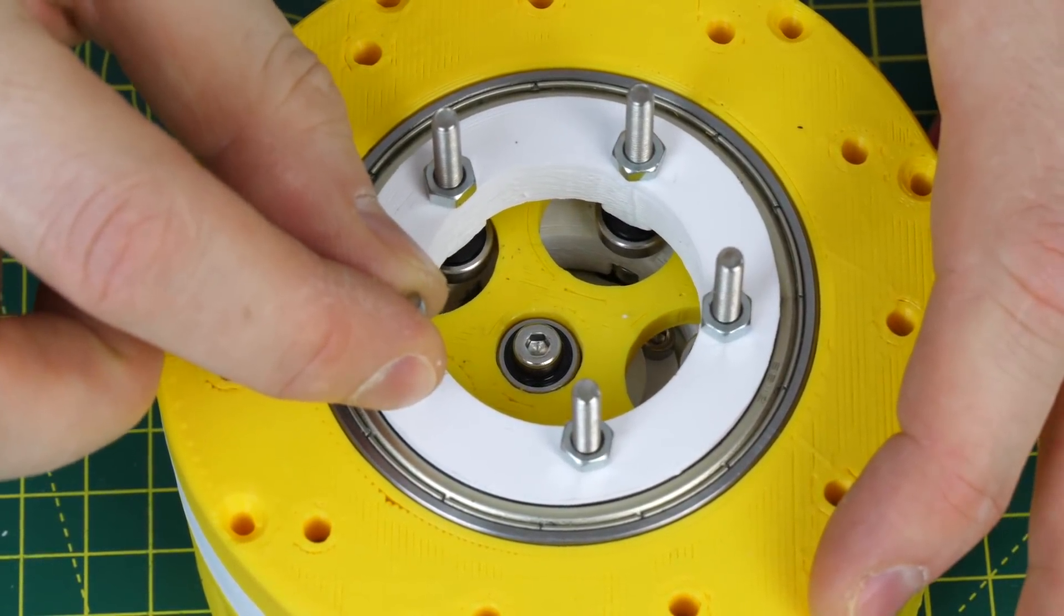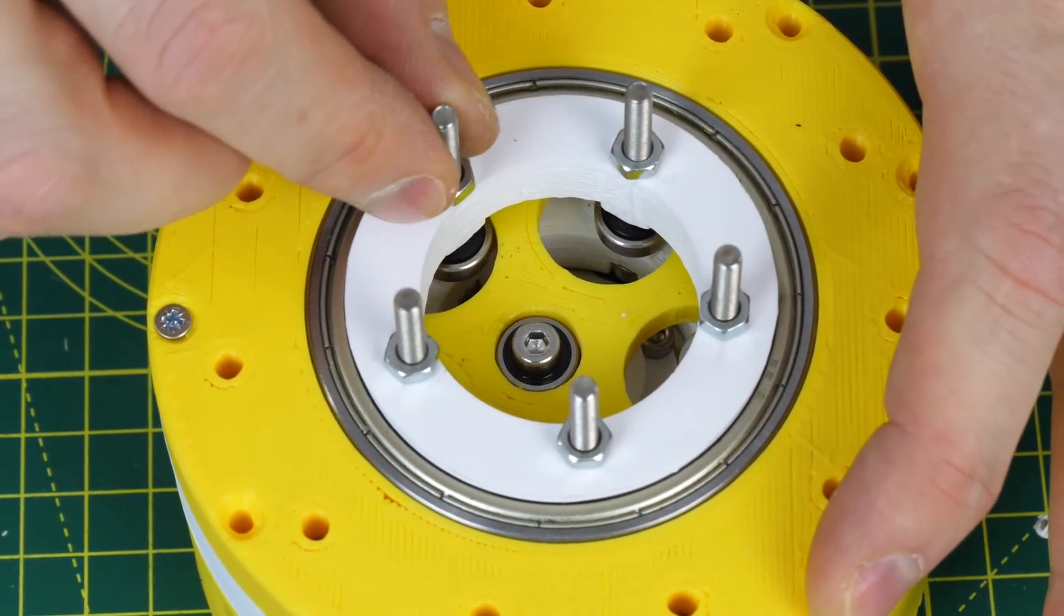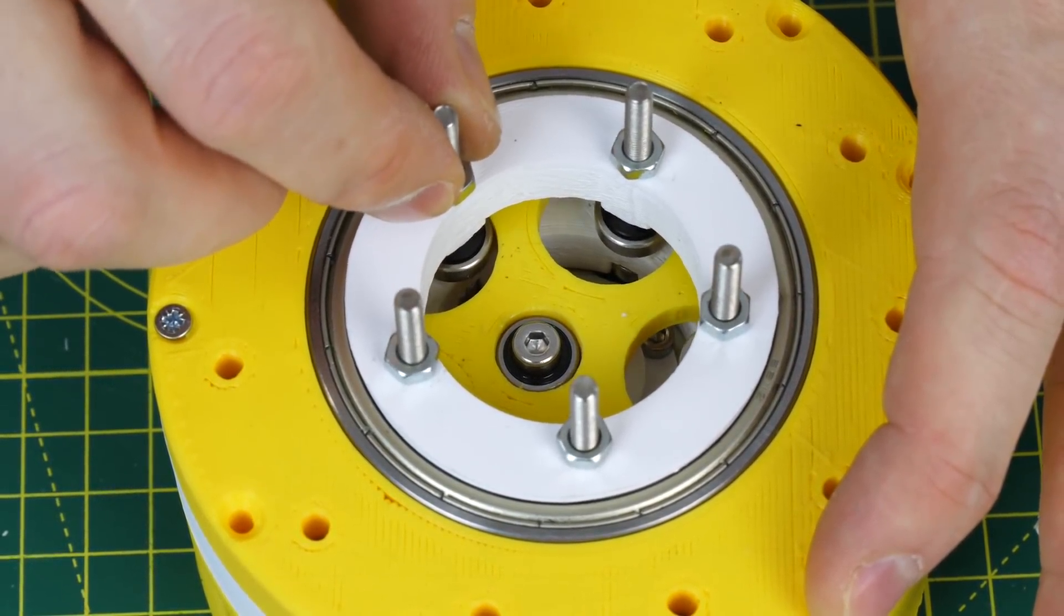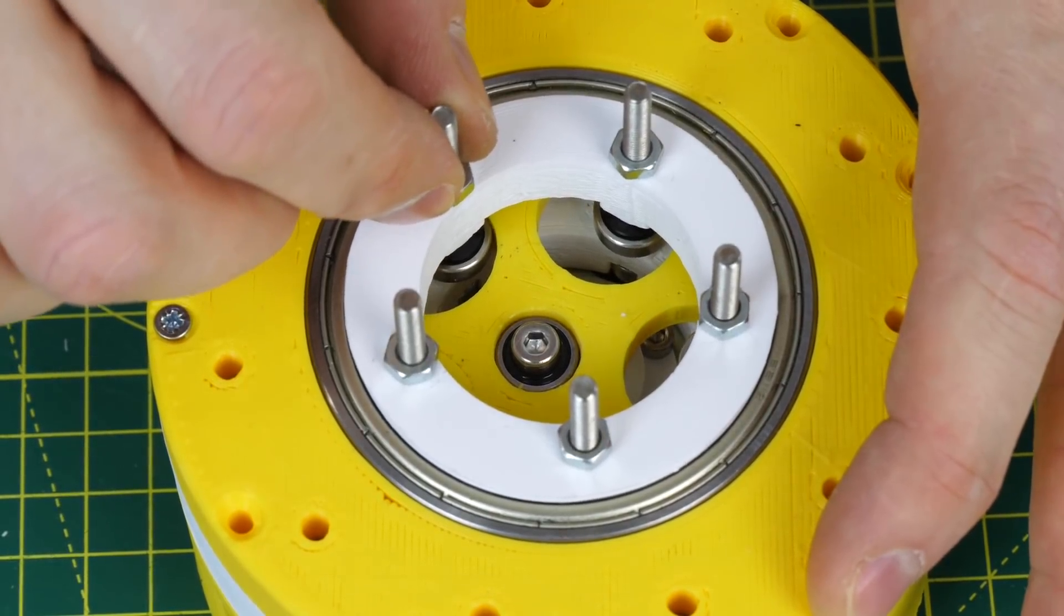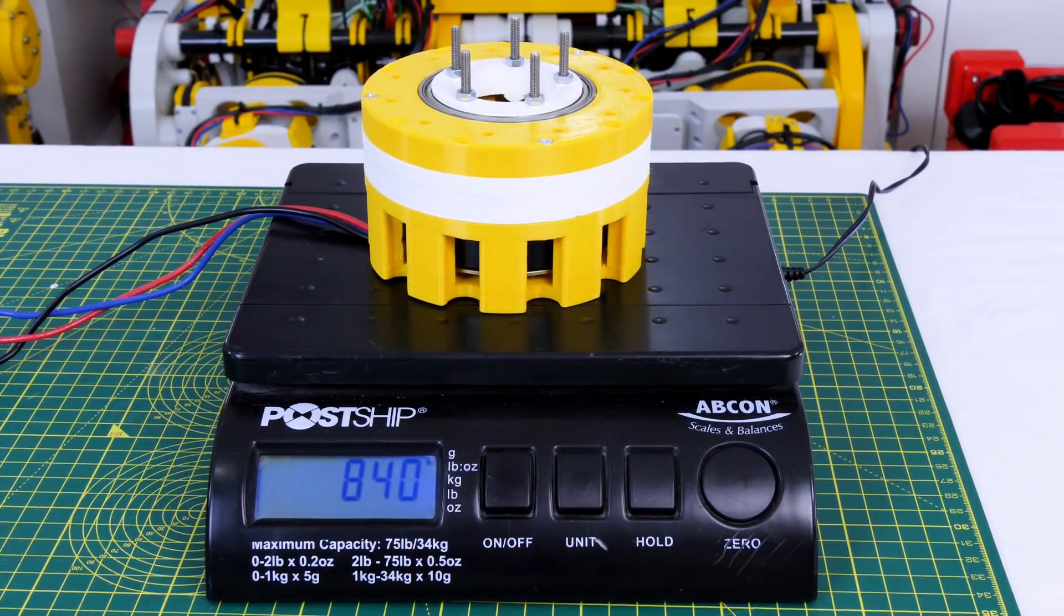There is some backlash though, and that's just down to the tolerance of the cycloidal disc, so ideally all of the holes, including the one in the centre where the bearing is, need to come in a little amount. The weight of this unit is under 850 grams, which is fine. We'd need 12 of them for a robot dog, so that's completely within scope for the total weight.